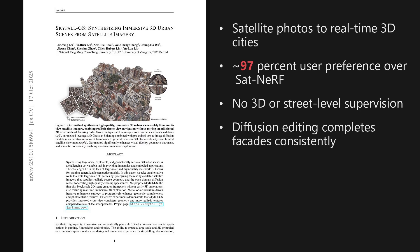This paper unveils Skyfall GS, a city block-scale system that turns satellite images into real-time, explorable 3D urban scenes, with user studies showing about 97% preference over SatNerf. The paper is titled Skyfall GS: Synthesizing Immersive 3D Urban Scenes from Satellite Imagery. And as we will see later, the results are really impressive.